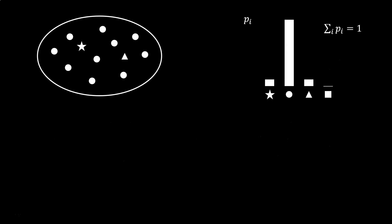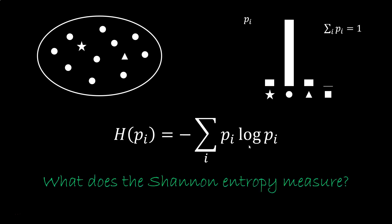The expression itself is pretty simple. We have a set of elements characterized by a distribution, the pi's represent the normalized fraction for each case. The Shannon entropy is minus the sum of p log p. The basic question is, what does it measure?